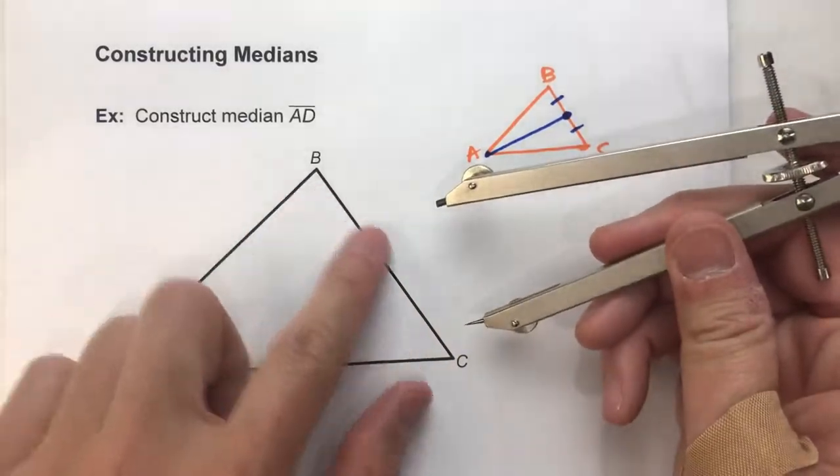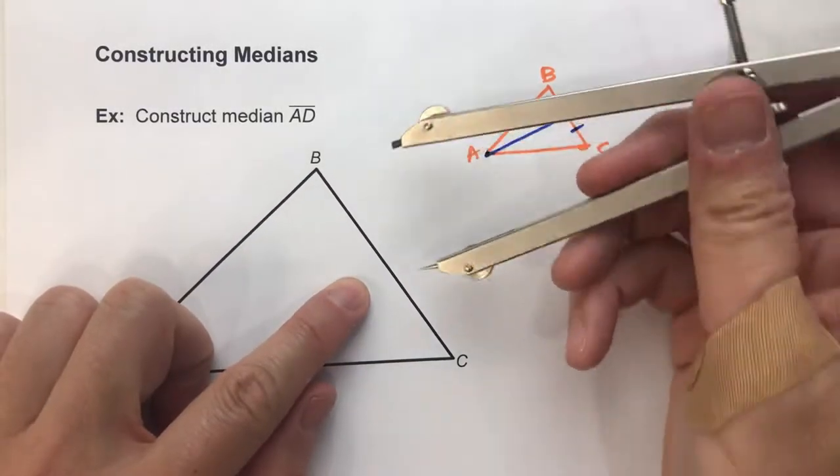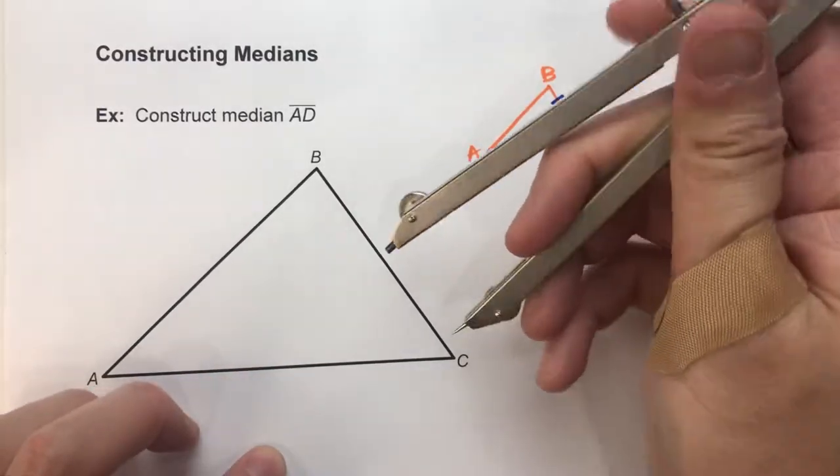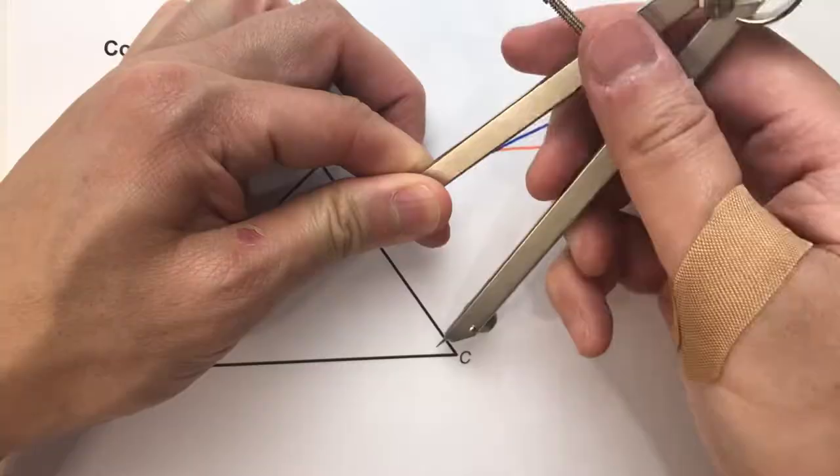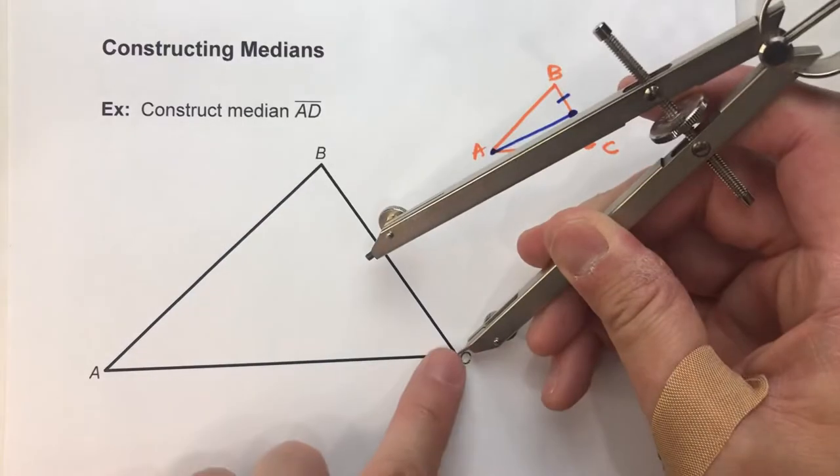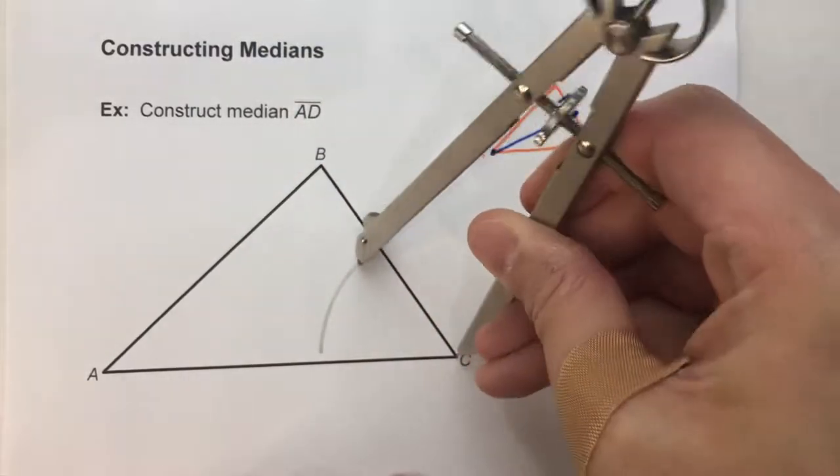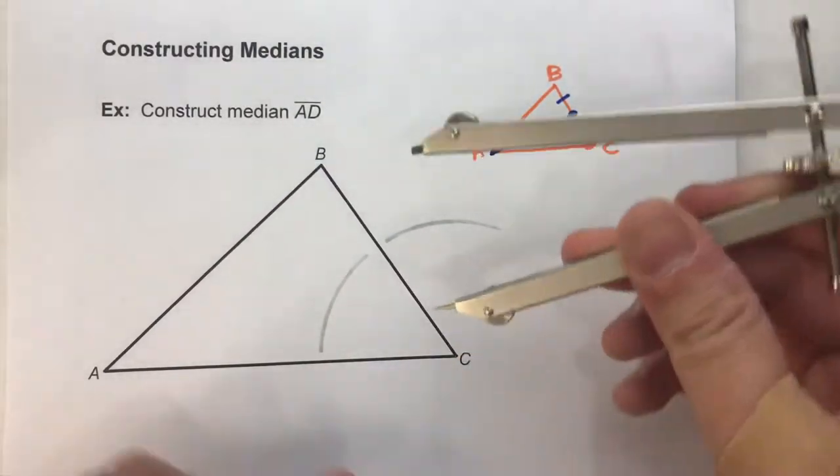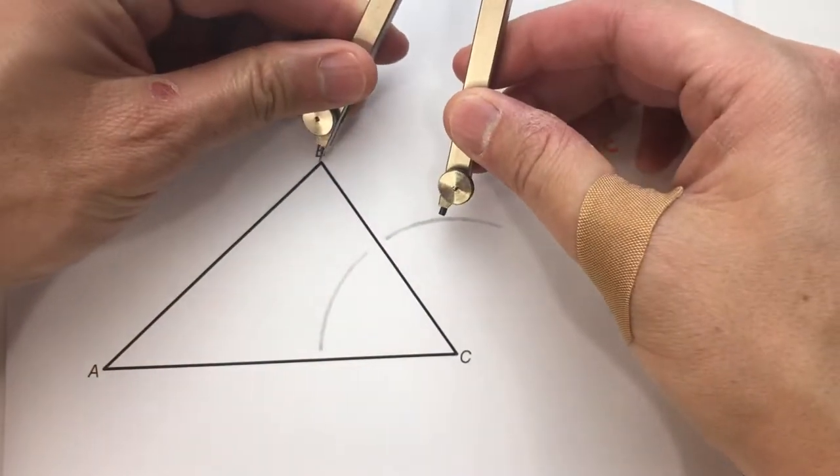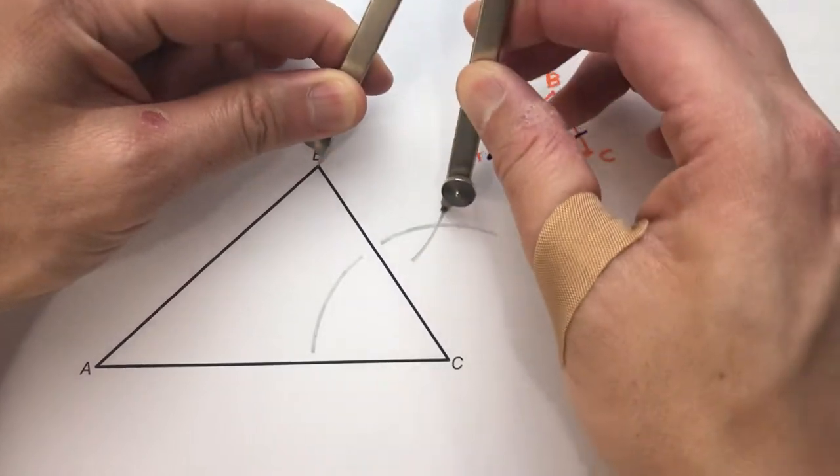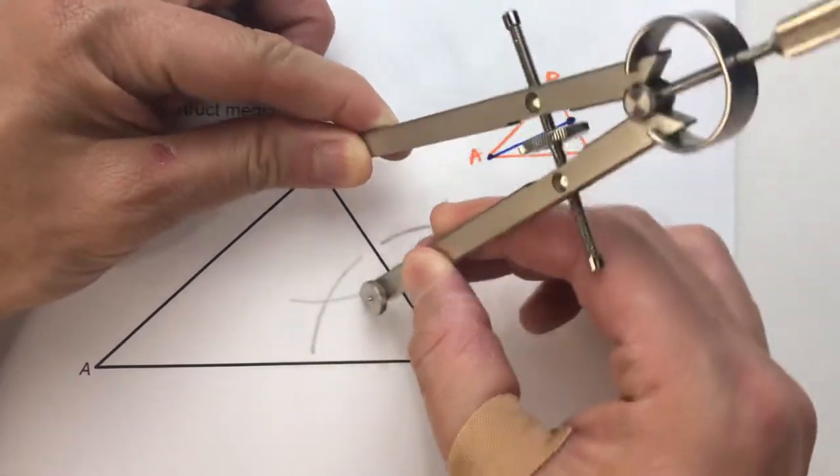I'm going to construct the perpendicular bisector of segment BC. Set my compass setting to more than half the length of these segments. And I'm going to swing an arc from the end, above and below. And I'll use that same setting on the other side of the segment and swing an arc above and below the segment.